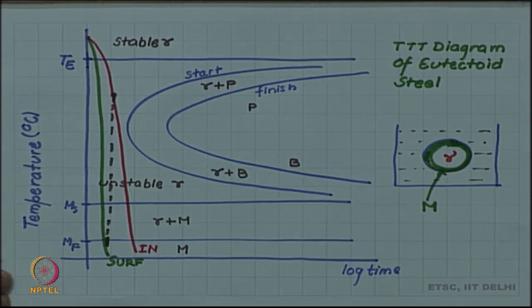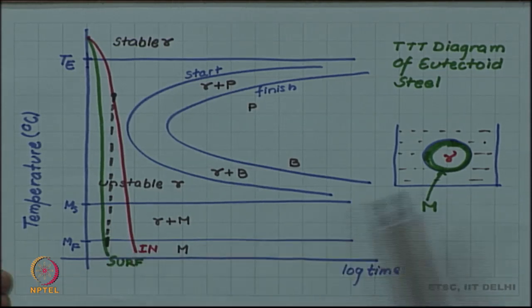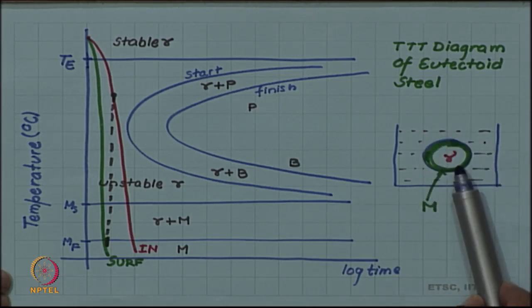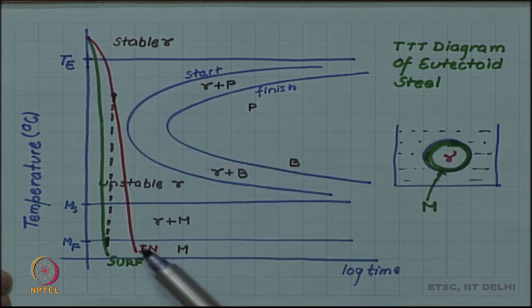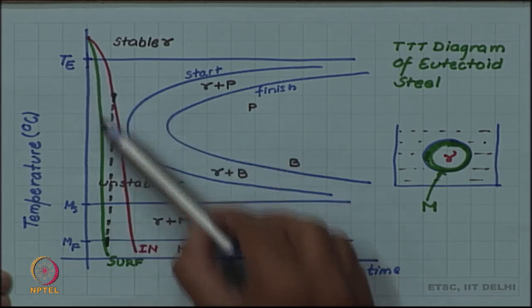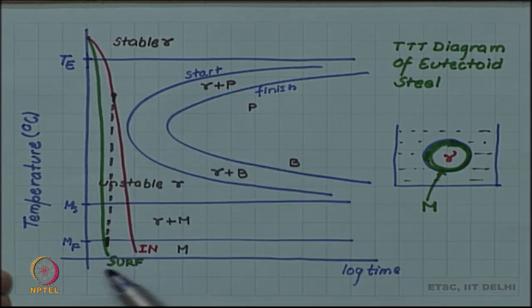We have seen that residual stress develops because the component size is large and the inside, the red line, cools slower than the outside, the green line, the surface.